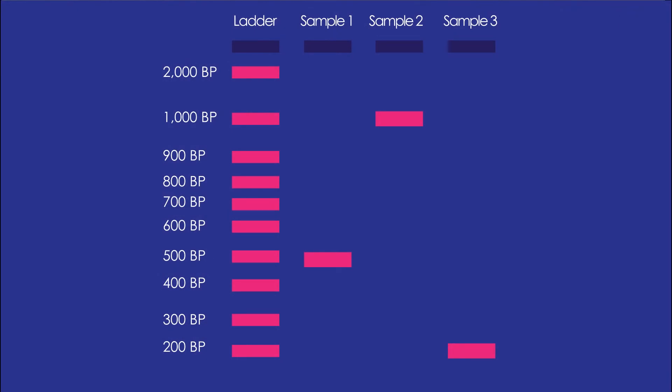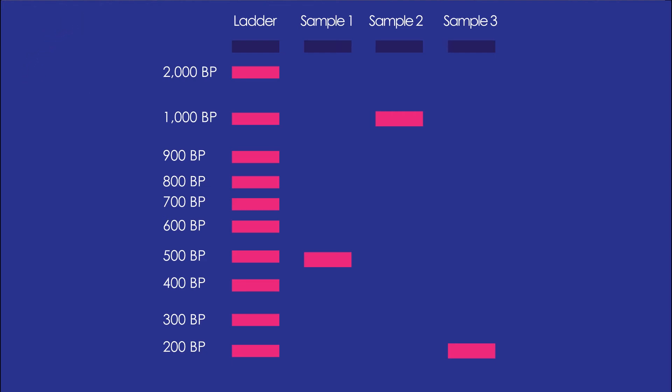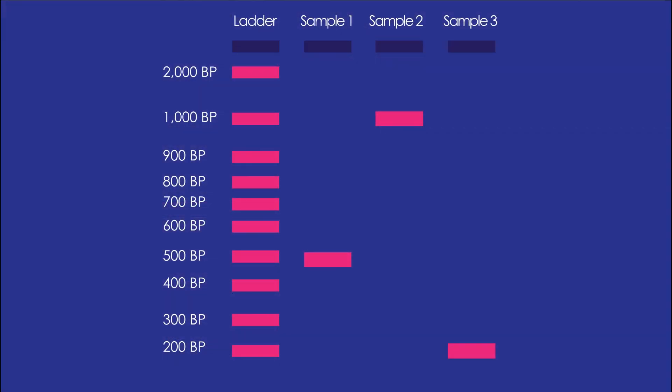Now that we have a basic understanding of how this all works, let's do a quick quiz. In this example there are four lanes — the first is your ladder, and then there are samples one through three. The first exercise is to put the lanes in order, not counting the ladder lane, from the lane with the smallest fragment to the lane with the largest fragment. The correct order is: sample three is the smallest, sample one would be next, and then sample two is the largest. The next exercise is to use the DNA ladder in lane one to determine the approximate size of the bands in lanes two through four.